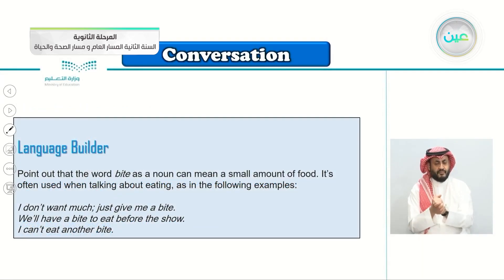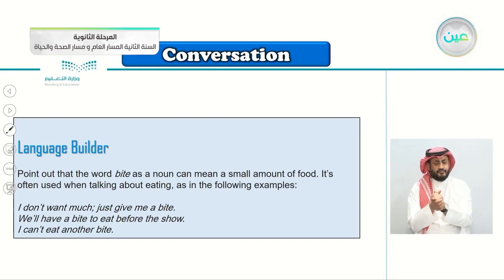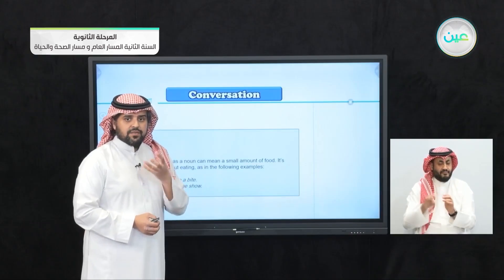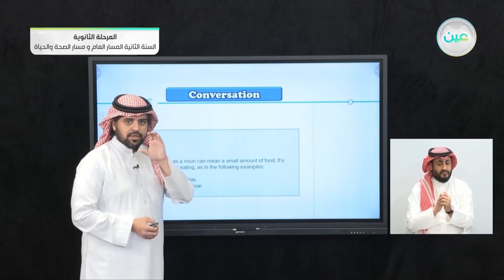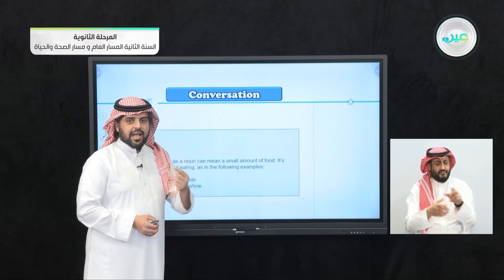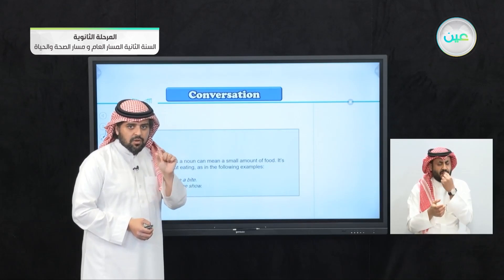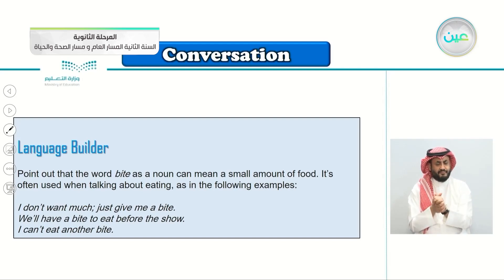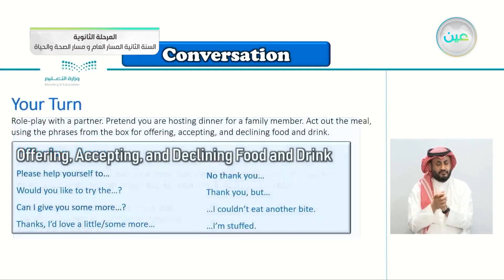Here's a language builder. The word 'bite' as a noun can mean a small amount of food. The verb 'to bite' is to bite something with your teeth, but as a noun, 'I'll have a bite' means a small amount of food. Examples: 'I don't want much, just give me a bite.' 'We'll have a bite to eat before the show.' 'I can't eat another bite.'